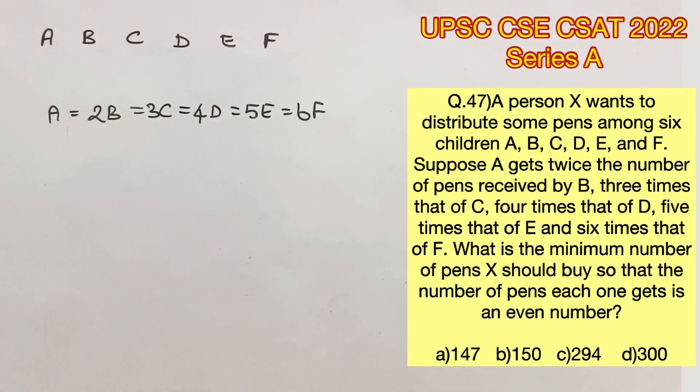What is the minimum number of pens X should buy so that the number of pens each one gets is an even number? Now, let's find out what is the total number of pens that X has distributed among these 6 children. To do that,